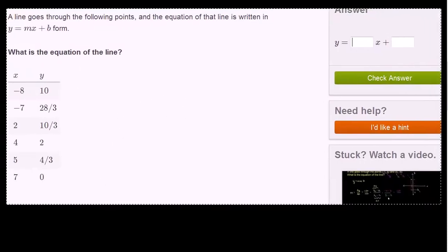And then we are told a line goes through the... OK, so same thing. The line goes through these points. What's the equation of the line? So the main idea here is you only need two points for an equation of line.